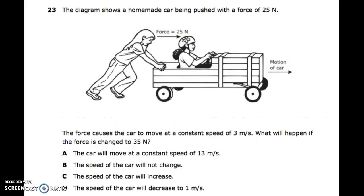Number twenty-three: the diagram shows a homemade car being pushed with a force of 25 newtons — with the force, direction, and motion of the car labeled. The force causes the car to move at a constant speed of 3 meters per second. What will happen if the force is changed to 35 newtons? A: the car will move at a constant speed of 13 meters per second. B: the speed of the car will not change. C: the speed of the car will increase. D: the speed of the car will decrease to 1 meter per second.